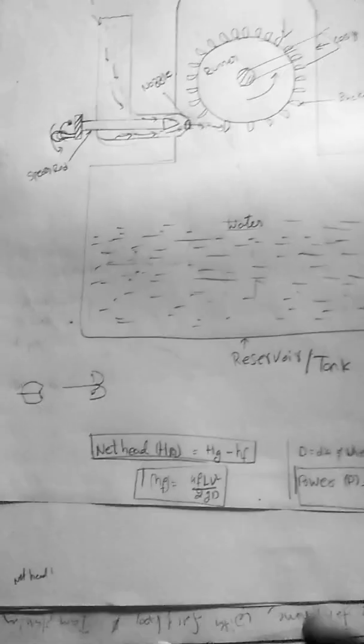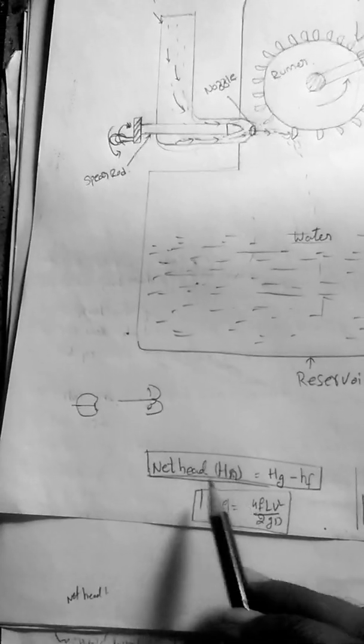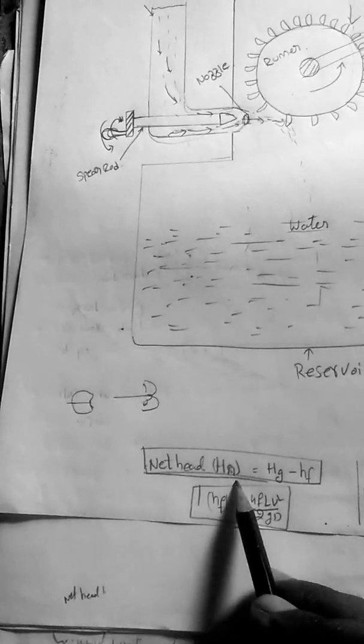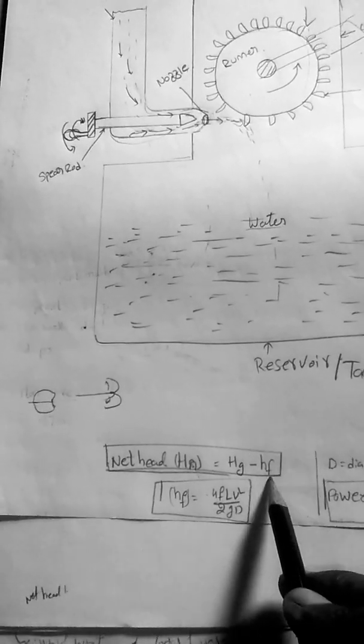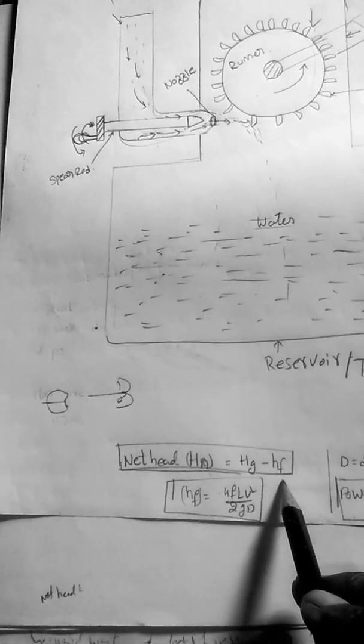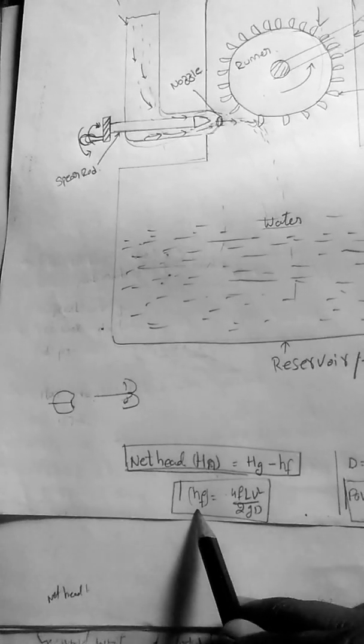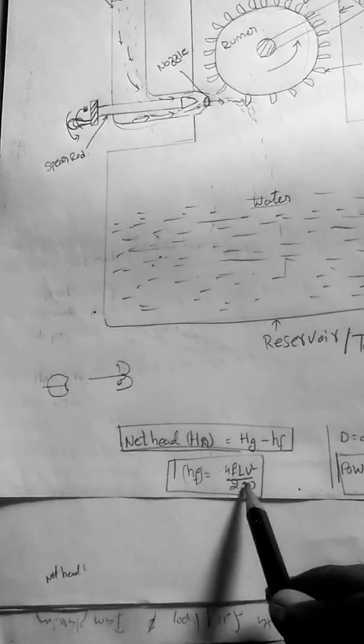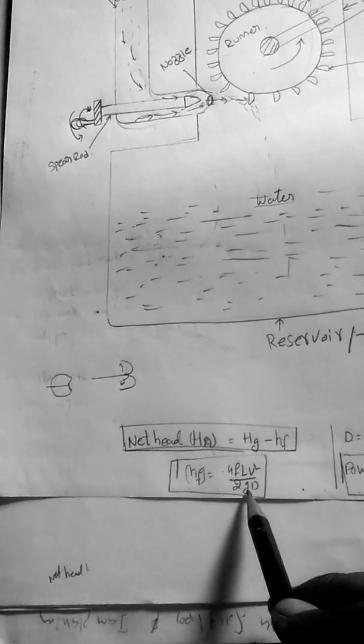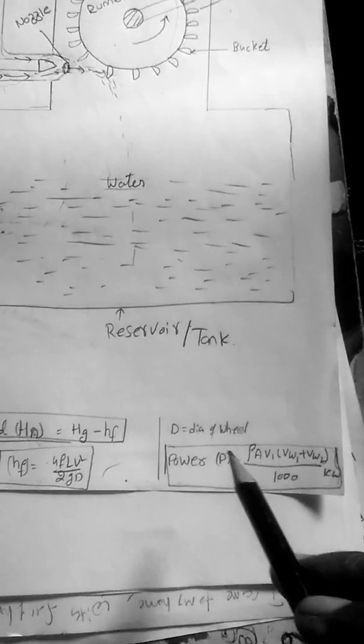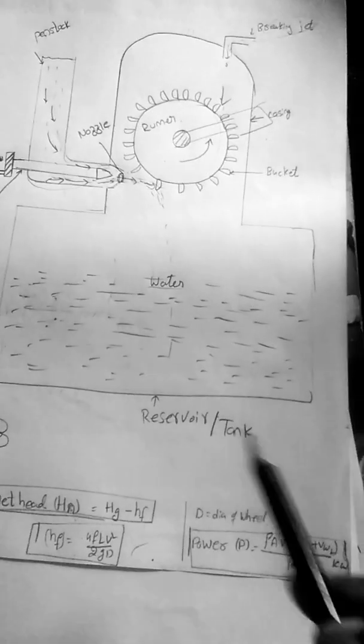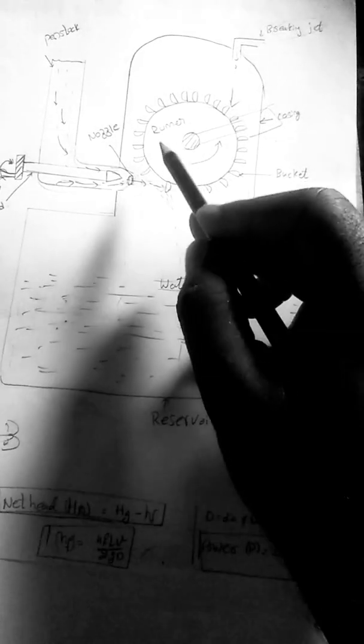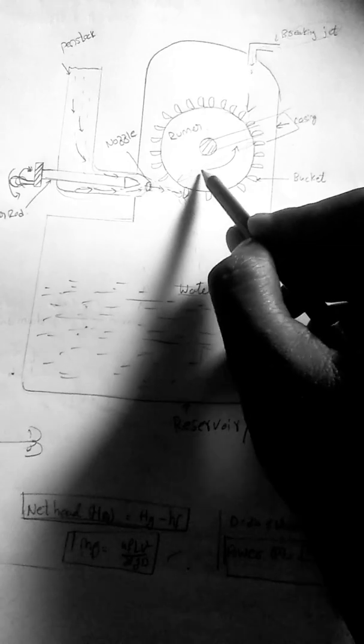We have the formula: net head H_n equals H_g (gross head) minus H_f (loss of head). Next, by the Darcy-Weisbach equation for loss of friction, we have the formula: 4fLV²/2gD, where D is the diameter of the wheel. By knowing this diameter, we can find the loss of head.